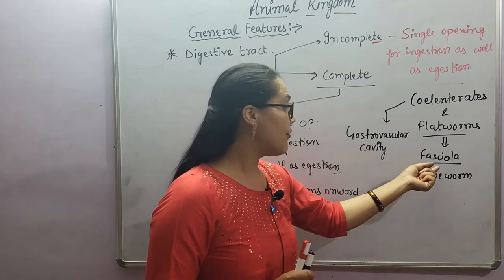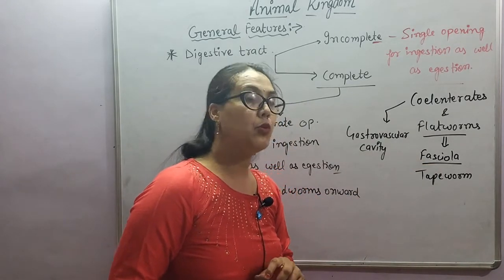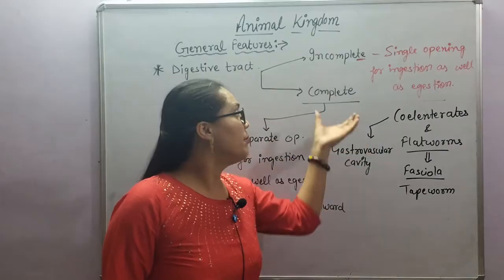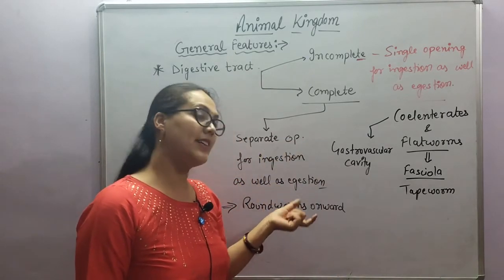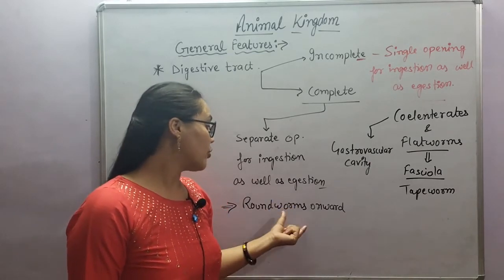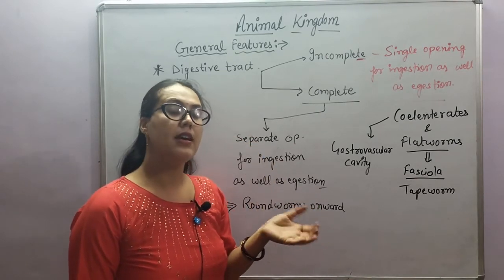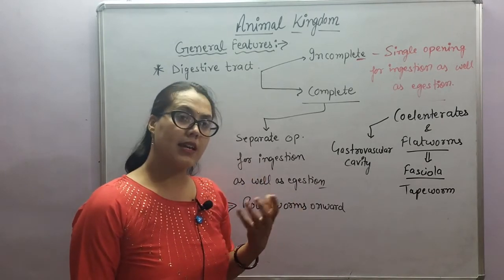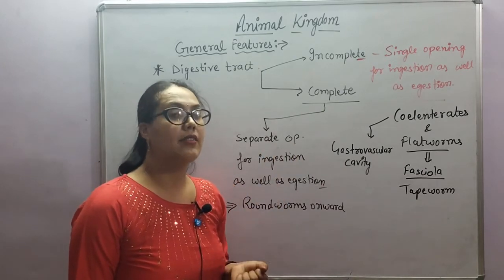In flatworms, examples we have are Fasciola and tapeworm. Fasciola is the scientific name of liver fluke. The other type of digestive tract is the complete digestive tract. In complete digestive tract, there are separate openings for ingestion and egestion. From roundworms onward, all higher animal groups have a complete digestive tract. In roundworms, the most common example is Ascaris. This is all about the digestive tract.